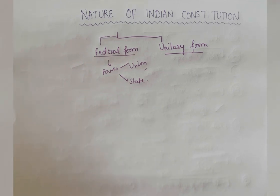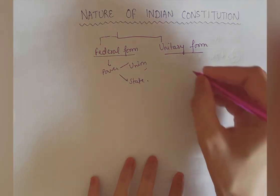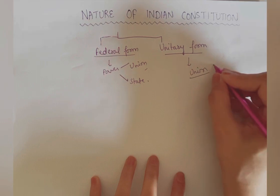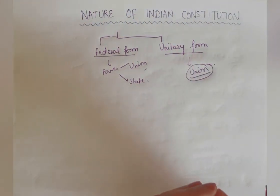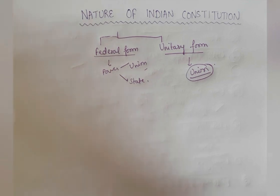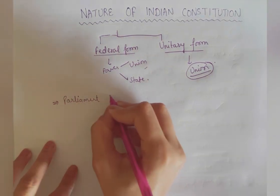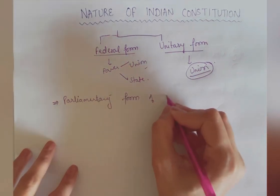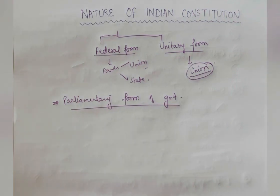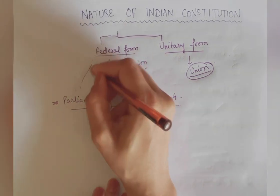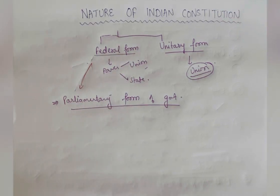In the unitary form, powers are concentrated at the national or union level. There is no decentralization — all powers are in the hands of the union government. Our Indian Constitution provides the parliamentary form of government with a federal setup. According to Professor K.C. Wheare, the Indian Constitution is quasi-federal in nature.